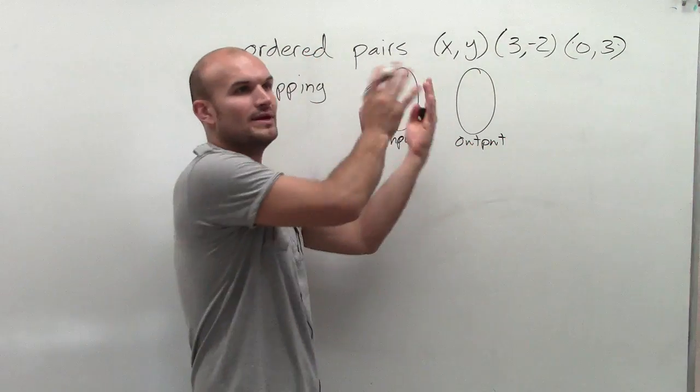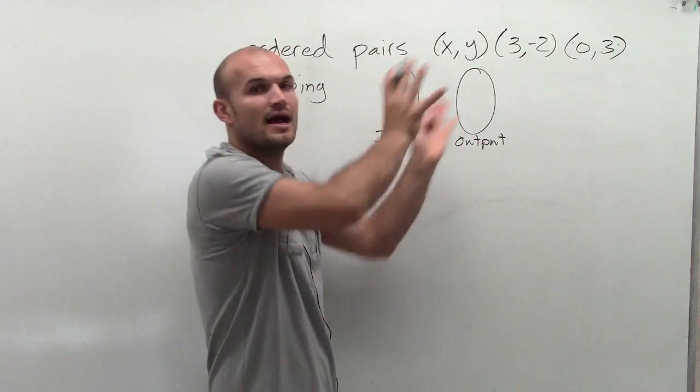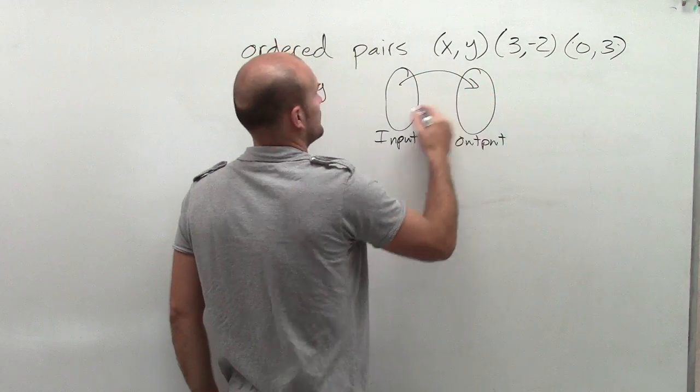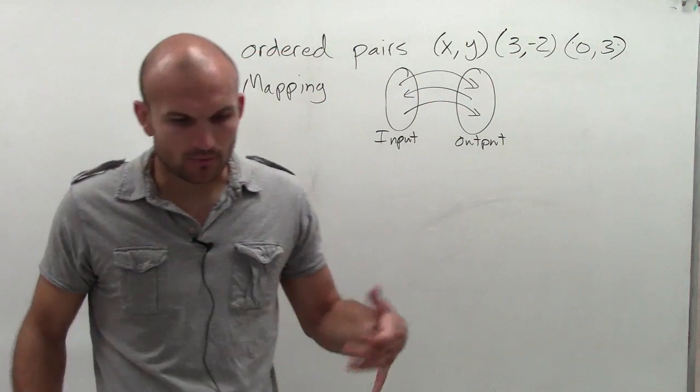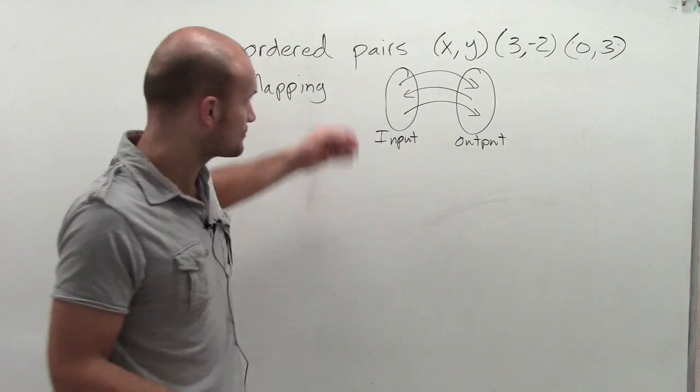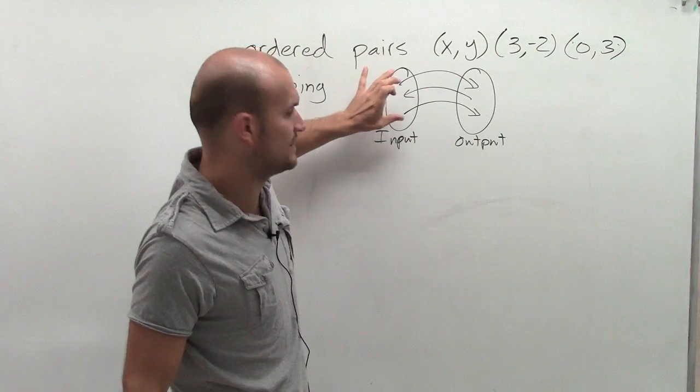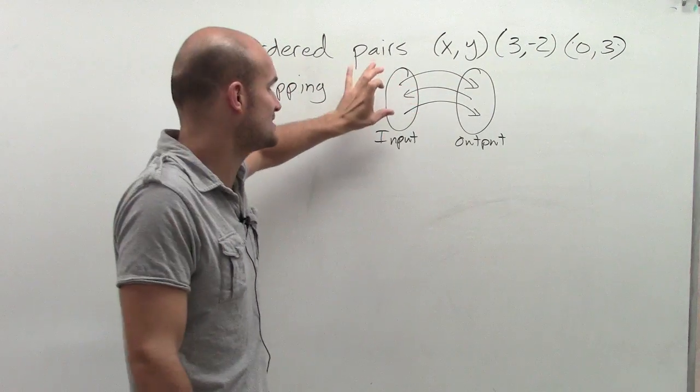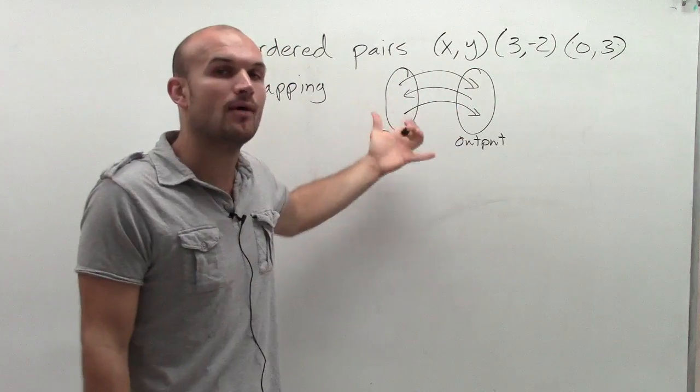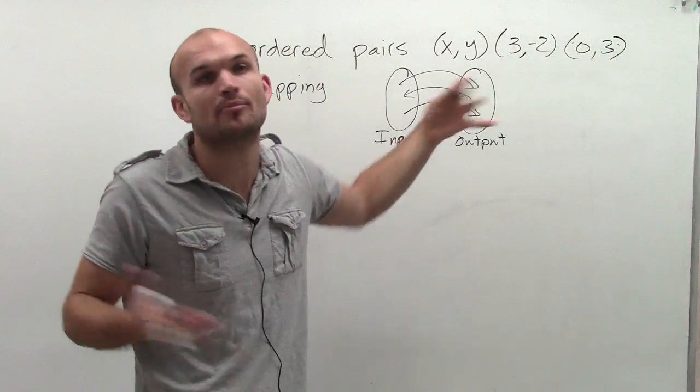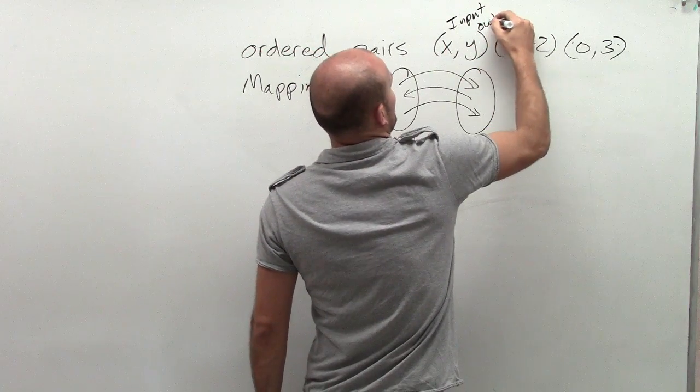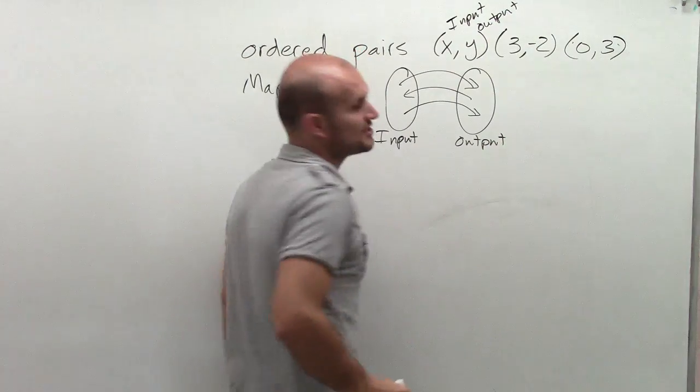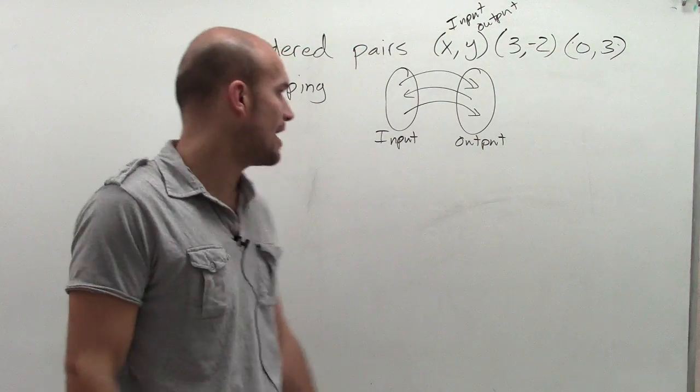So it just tells us if we have what's in our input and then the relationship to our output. When using mapping to describe a relation, it just tells us how are they related. How are your elements in your input and your output related? And I forgot to mention, too, your x values are your input and the y values are your output.